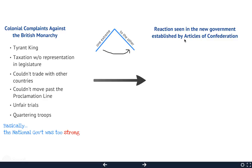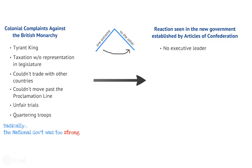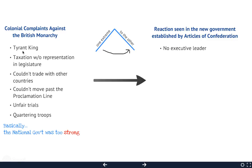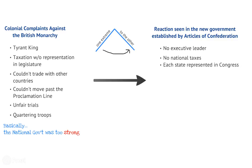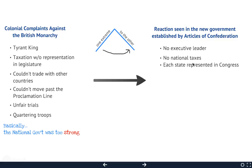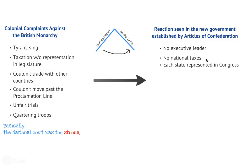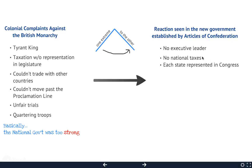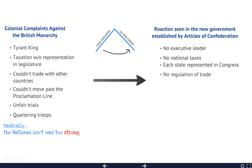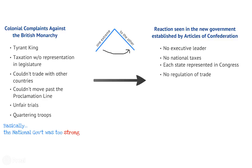When they created their new government, a document called the Articles of Confederation — a confederation being a friendship — they decided to do everything the exact opposite of what they had before. Whereas before they had a tyrannical king, now they would have no leader whatsoever. Whereas they had been overtaxed, now there would be no federal taxes. Each state would decide its own taxes, and each state would have one vote in Congress.